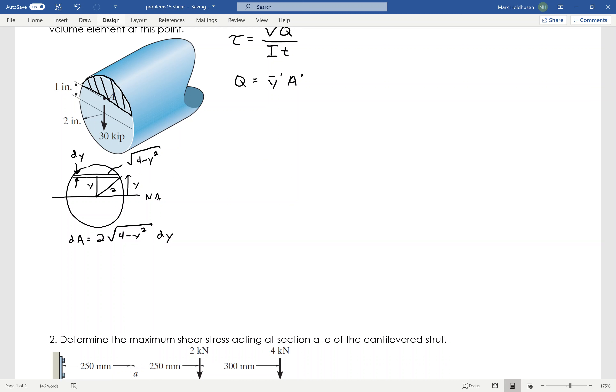So, if I want to find the area above that, I just integrate this going from Y equals 1 all the way up to Y equals 2. So, the area then becomes the integral from 1 to 2 of 2 times the square root of 4 minus Y squared DY. Doing that calculus, I can find that the area from 1 up to 2 inches is 2.457.